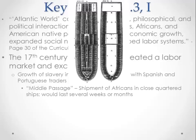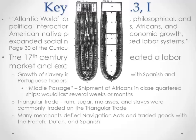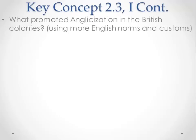The Middle Passage was a horrific journey where as many as one out of four Africans would die. You would be cramped together, chained to other individuals, forced to go to the bathroom where you stood, and fed very little. The triangular trade developed — the trade of rum, sugar, molasses, and slaves between the Americas, Europe, and Africa. Many merchants defied the Navigation Acts, which required colonists to trade only with Great Britain, and instead traded with the French, Dutch, and Spanish — a violation of mercantilism.